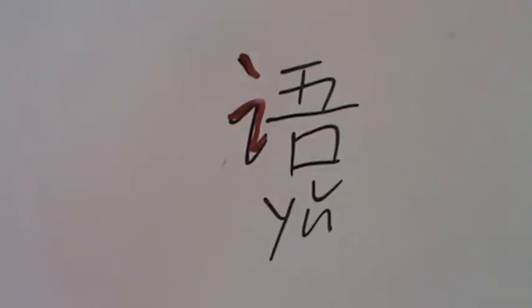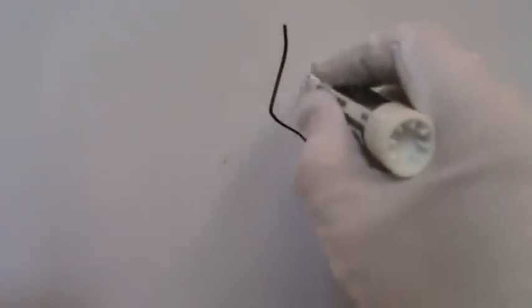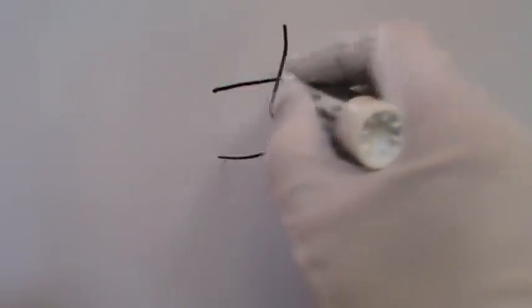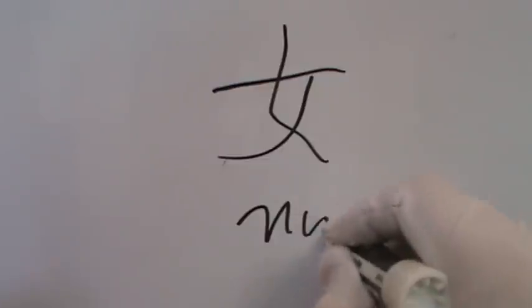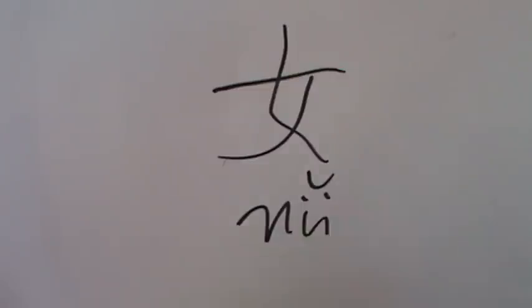Next page, page 30. Number 31: 女 (Nü), written with 3 strokes. Nü means woman or female. And the character itself is also the radical.